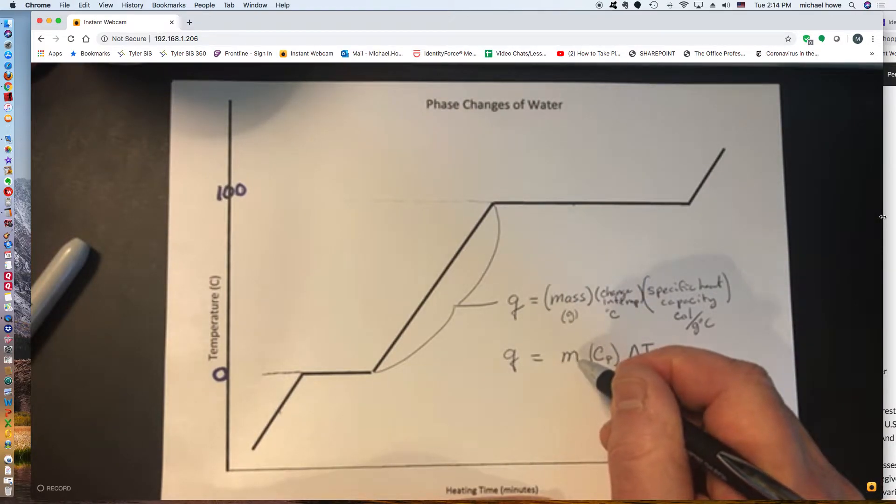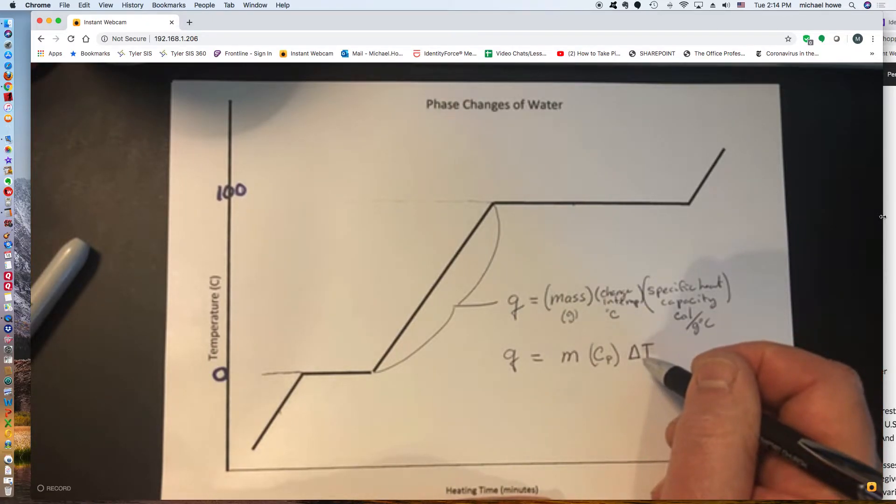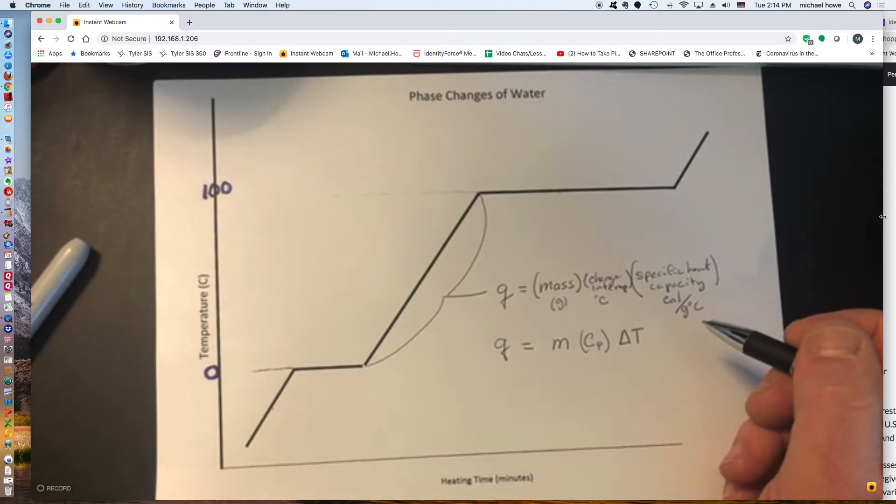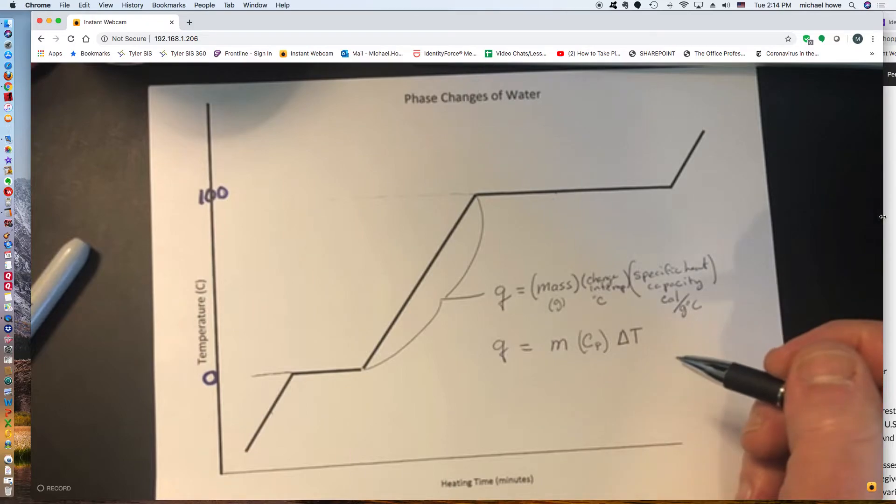M stands for mass. Cp stands for specific heat capacity. Delta T is in degrees C. You do not need to change the Kelvin in this unit because we'll always be talking about changes in temperature. And the change on the scales of Celsius, Kelvin, and Celsius are the same.